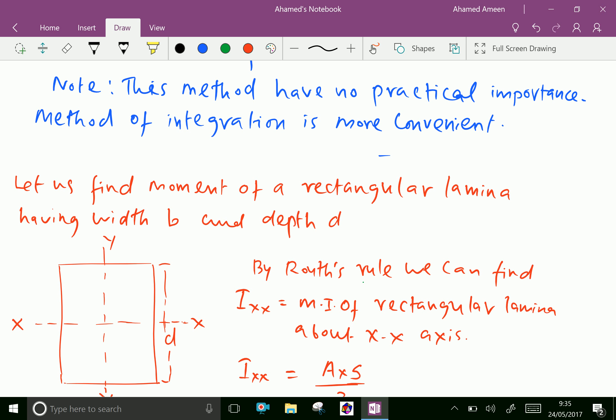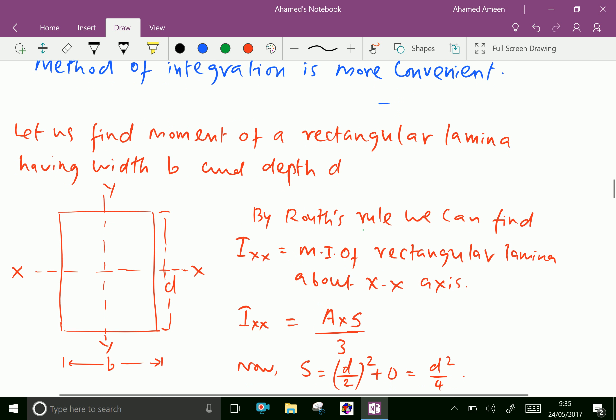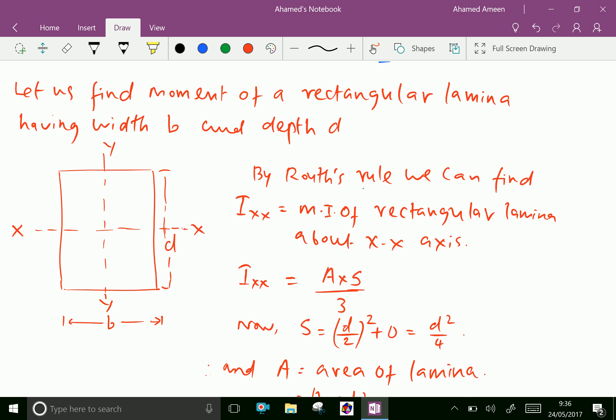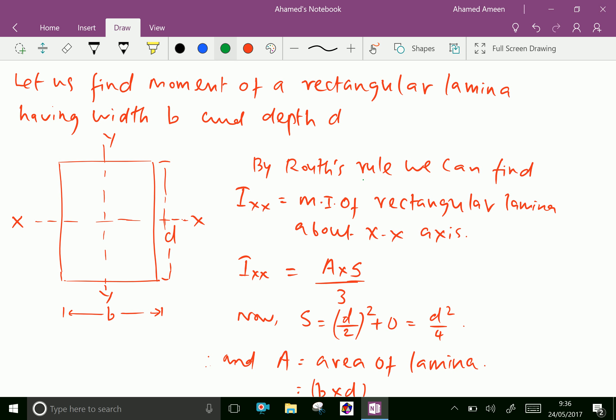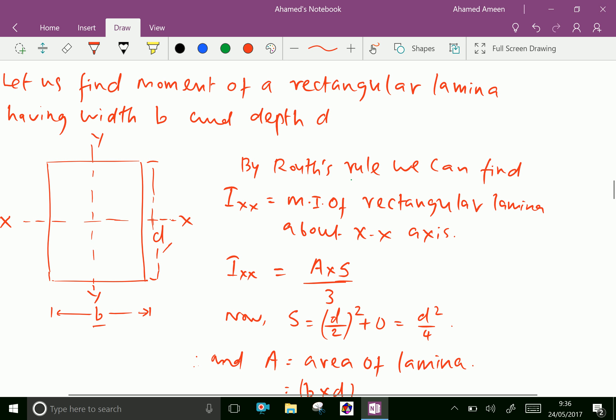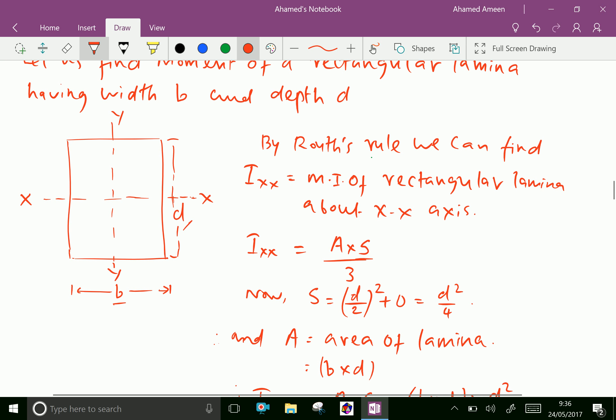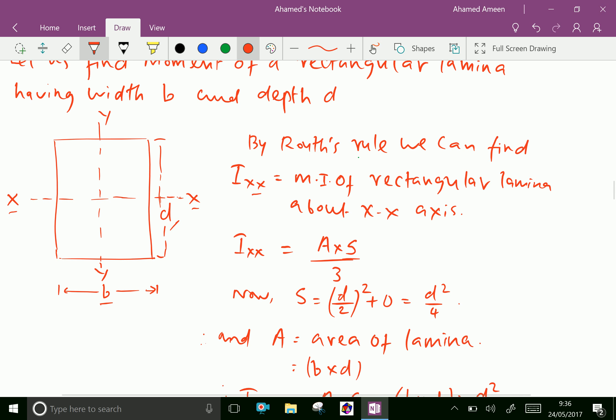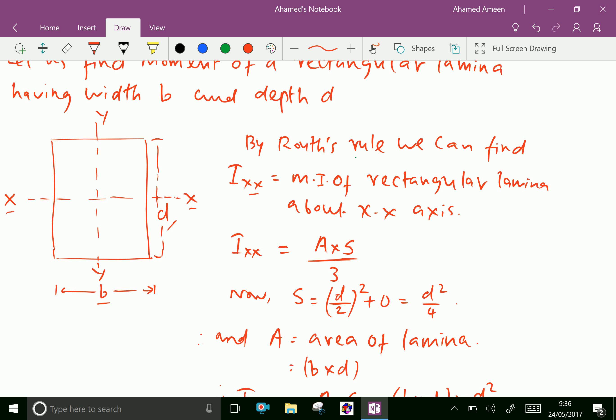Now, let us find moment of a rectangular lamina having width B and depth D. Consider this rectangular lamina having width B and depth D. By Ruth's rule, we can find moment of inertia about the axis x, that is Ixx equal moment of rectangular lamina about x x axis.